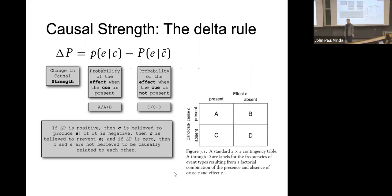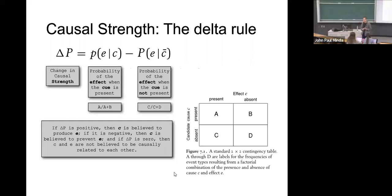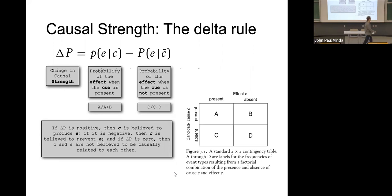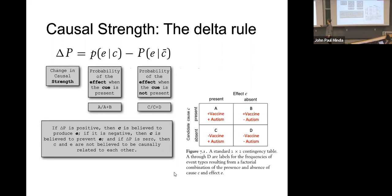If delta P is positive, the cue is believed to produce the effect — there's a possible causal relationship. If it's negative, it could be a preventative or anti-causal relationship. If it's near zero, there's probably no relationship. You can interpret this the same way as a correlation coefficient: strong positive means strong causal link, strong negative means preventative link, near zero means no likely relationship.